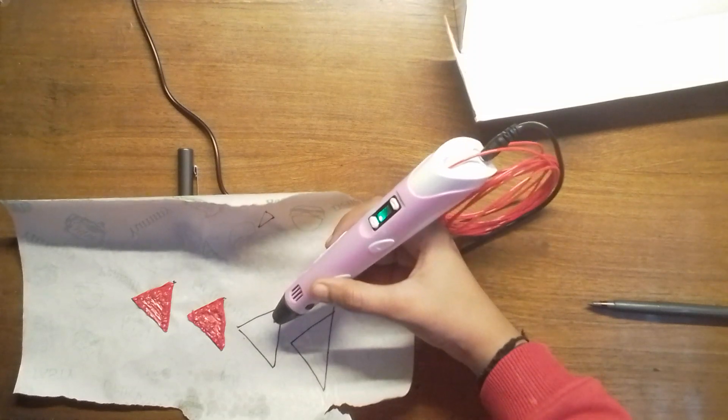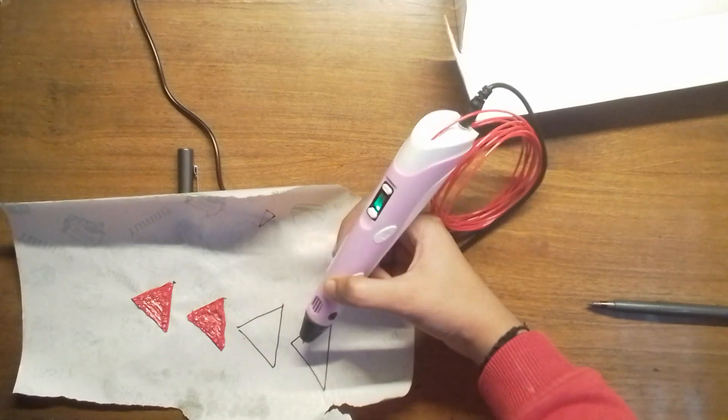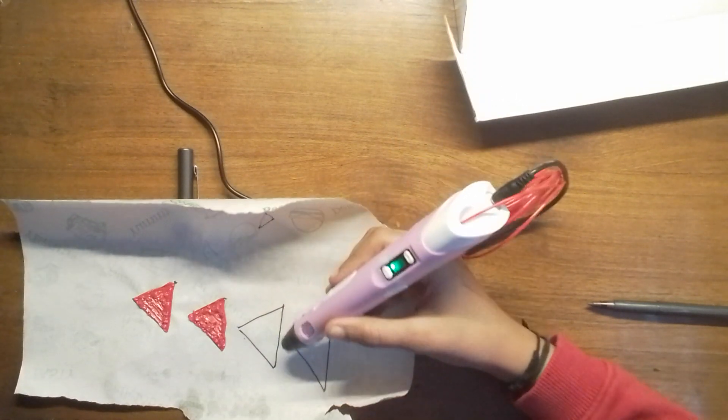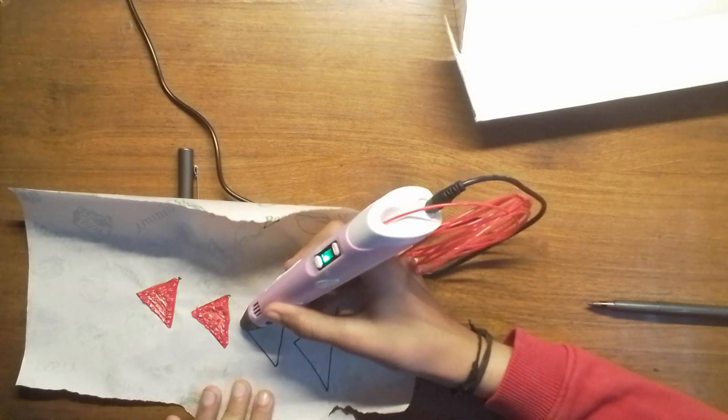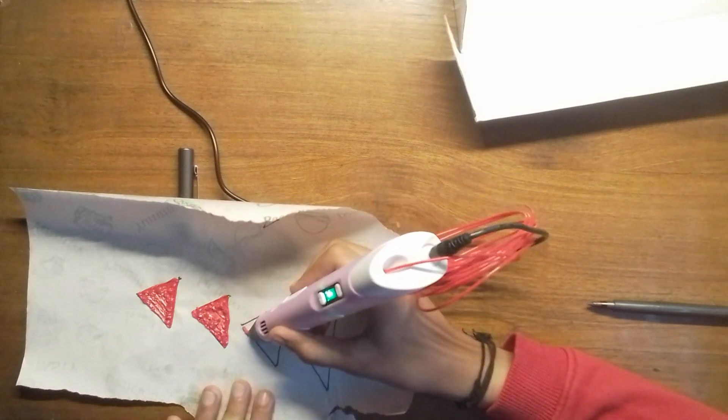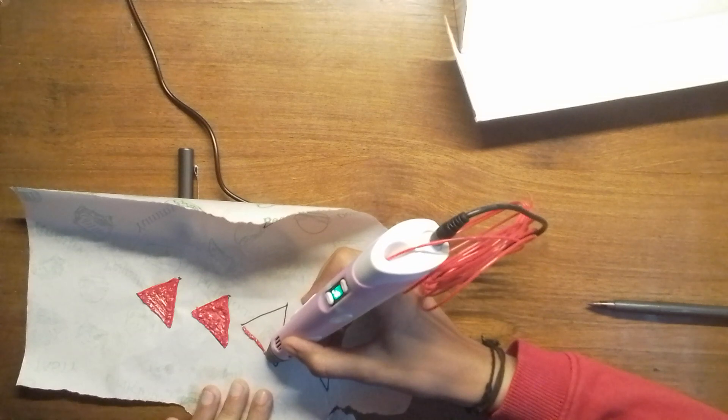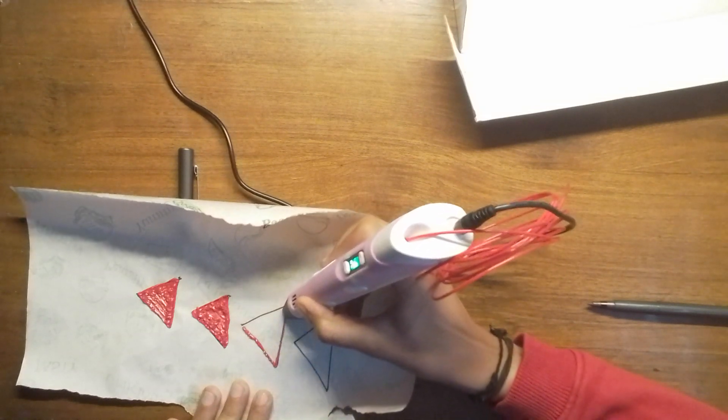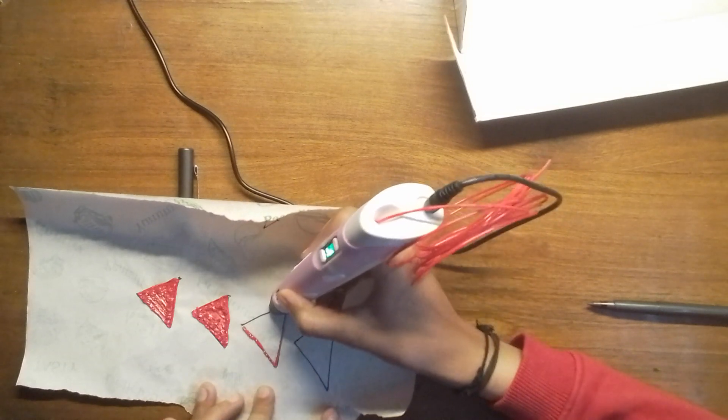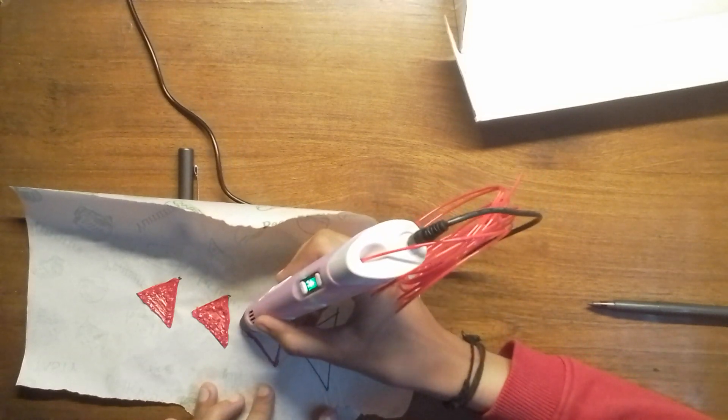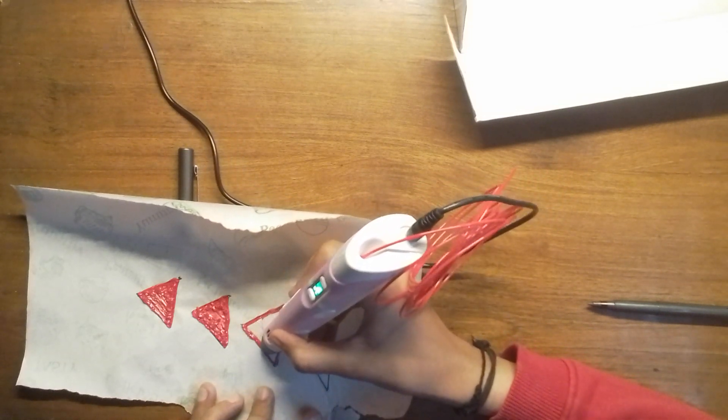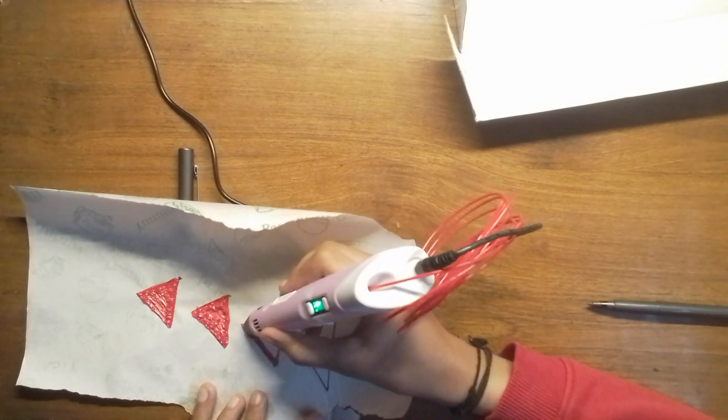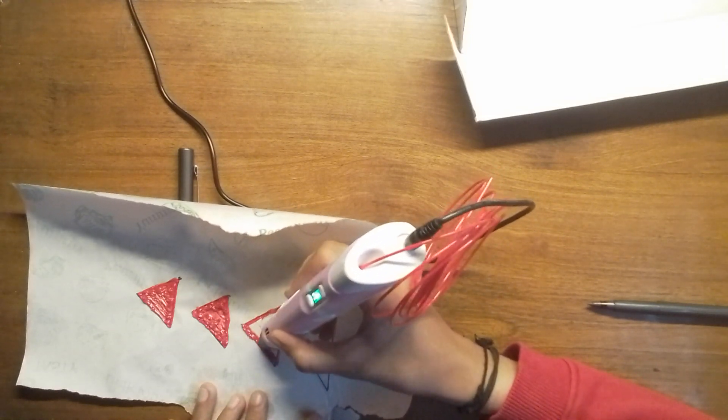As you can see, I already did two of them. Now two are left. I'm going to show you how to do it. First, we're going to outline them. We can do it fast or slowly, but I prefer doing it fast.